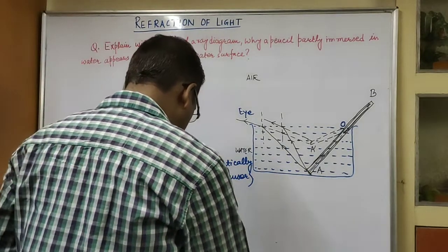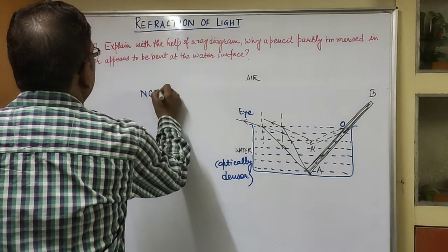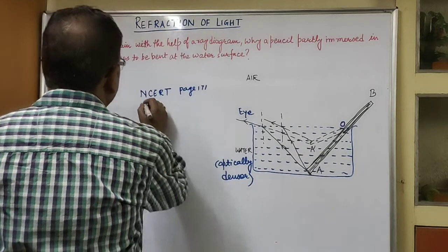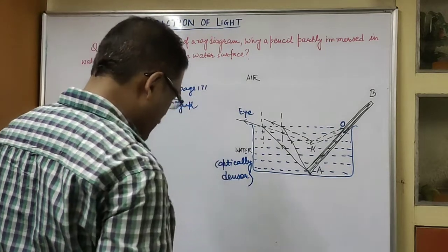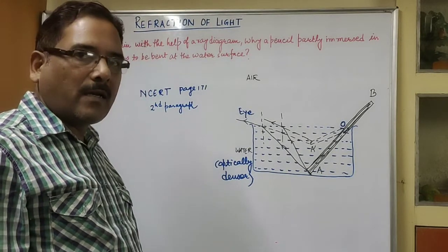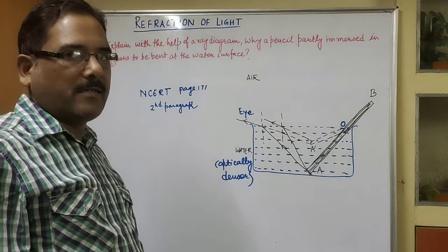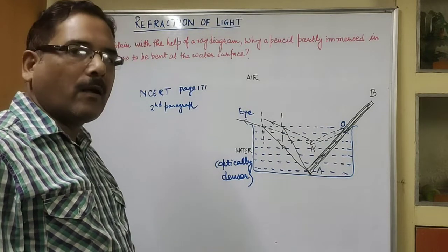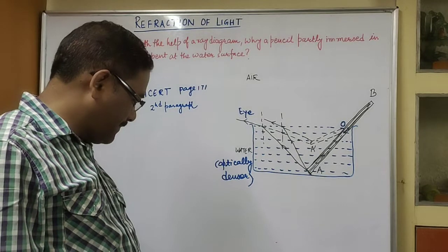Now for some more questions: go through your NCERT book, page 171, second paragraph under 'Refraction of Light'. You will see many phenomena listed there. The first homework question is: why does the bottom of a tank or a pond containing water appear to be raised? Write this as question number one for homework.